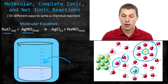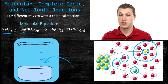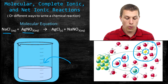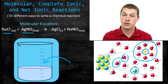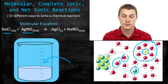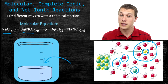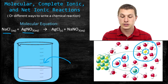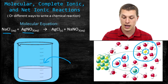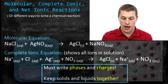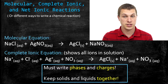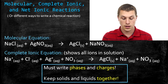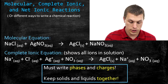So the molecular equation is good, but it obscures the fact that our compounds are actually splitting up into separate ions. What we might want to do is write our reaction in terms of those ions rather than those molecules. That turns out to be what we do in the complete ionic reaction — that's the first type of chemical equation we're going to talk about. The complete ionic reaction splits apart every single ion that can dissociate, that is dissolve, in our molecular equation.